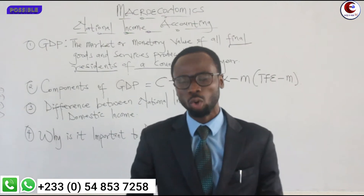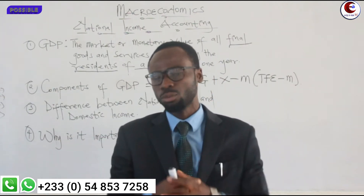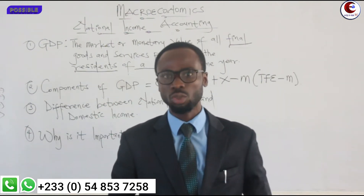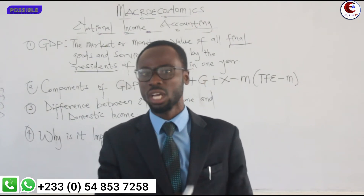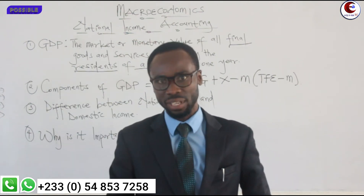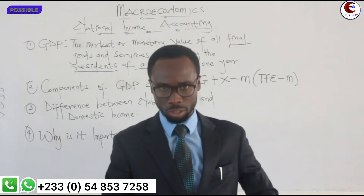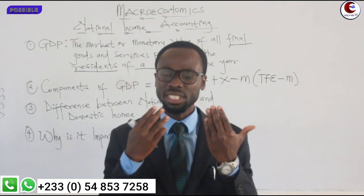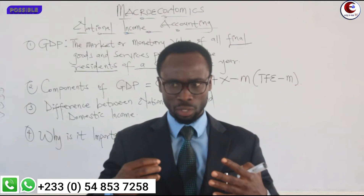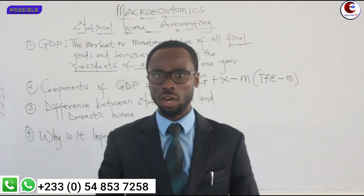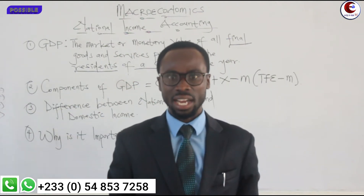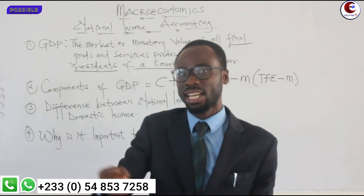Now we are going to look at the components of GDP. There are many things that come together for us to get GDP. From our previous lecture, GDP equals consumption plus investment plus government spending plus exports minus imports. We are going to look at each one in detail. The first component is consumption. Consumption focuses on the expenditure by the household — the cost incurred by the household on final goods and services.